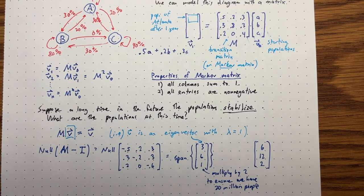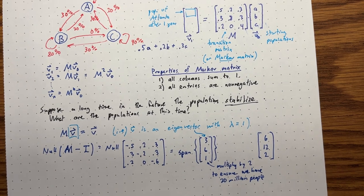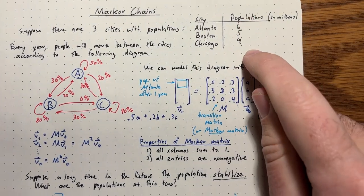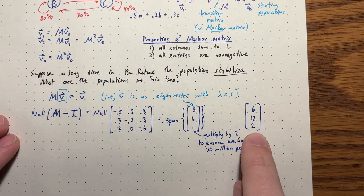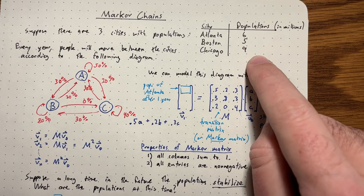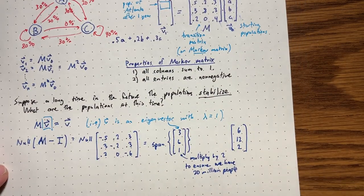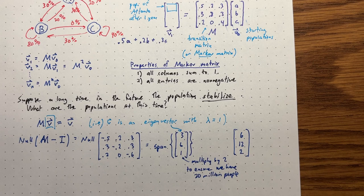That's the first example of a Markov chain. But there might be something you're worried about - how do we know that from the starting populations we'll eventually actually converge to these stabilized populations? Certainly it's true that this satisfies the equation, but how do we know that VN will converge to this vector? We'll keep that question in mind, but I'd like to do another example - this time with a two-by-two matrix.